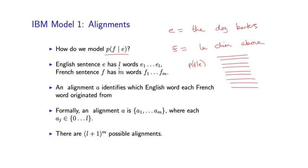I'll assume throughout that each English sentence has L words and the French sentence has M words — so M and L are the lengths of the two sentences. You might try to model this probability directly with no intermediate structure, but that turns out to be very difficult. And so an absolutely critical idea in the IBM models was to define the idea of what's called an alignment between these two sentences.